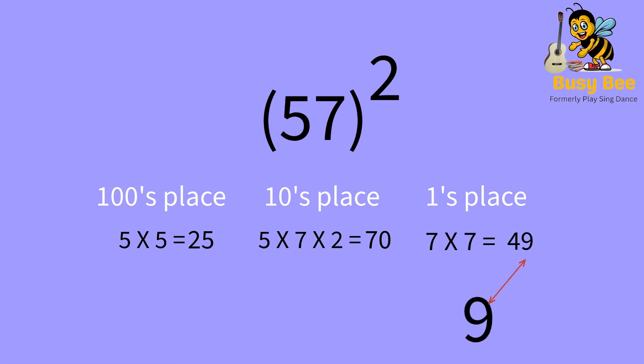We will take 9 as the ones place answer. Next, we add 70 and 4, which is 74, and we bring down the 4 as the tens place answer. Next, we'll add the 25 and 7, which is 32. We bring down the 2 as the hundreds place answer, and we bring down the 3 as the thousands place answer.